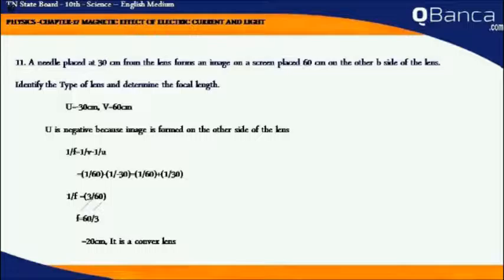1 by F equals 1 by V minus 1 by U, which is 1 by 60 minus 1 by minus 30. Minus times minus is plus, so 1 by 60 plus 1 by 30.